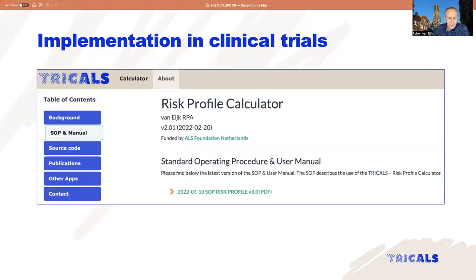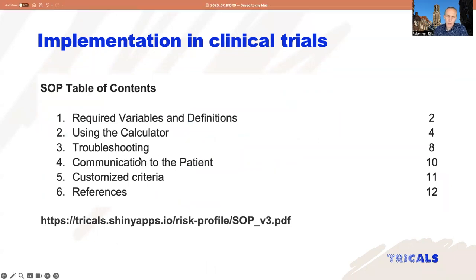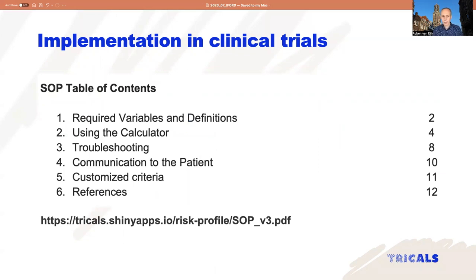We have also developed a standard operating procedure for how to define the exclusion criteria. There is a lot of implementation work going on in the last two years. We had to write a standard operating procedure about how we communicate outcomes to the patient — we need to say something about prognosis or why a patient is excluded. We did a study with patients to find the best way to do that.